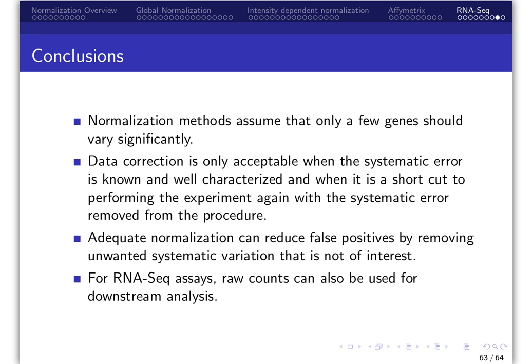Adequate normalization can reduce false positives by removing unwanted systematic variation that is not of interest. For RNA-seq assays, raw counts can also be used for downstream analysis.